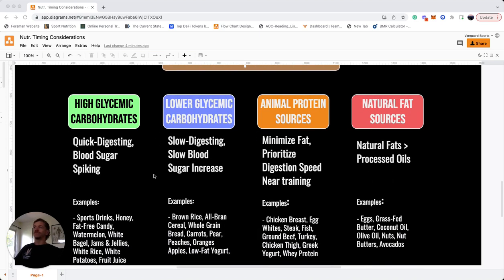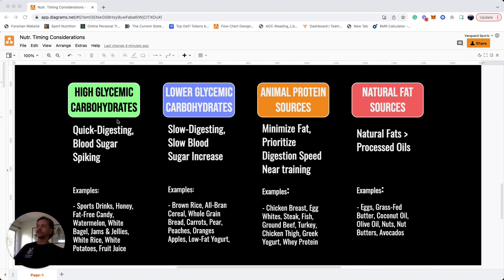We're going to do a quick refresher. The first one is high glycemic carbs, and these are going to be quick digesting carbs that result in a quick blood sugar spike. So they're going to digest quickly, and we'll be able to use them for fuel quickly. Some examples would be sports drinks, honey, fat-free candy, watermelon, white bagels, jams, jellies, white rice, potatoes, and fruit juice, to name a few.